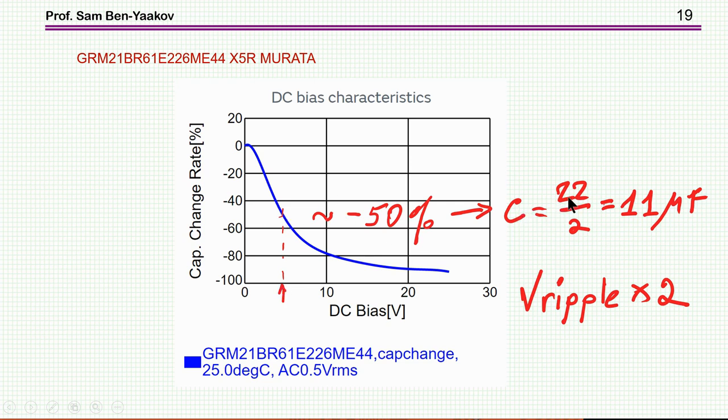So we don't have 22, we have actually 11 microfarad per capacitor. This means that the ripple that we've calculated is incorrect and it'll be higher. It'll be twice the value we calculated, which is again a fairly low value. That's not explaining any of the spikes.